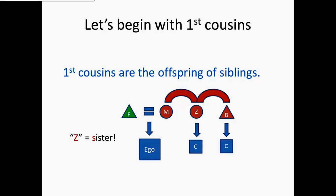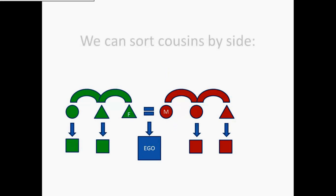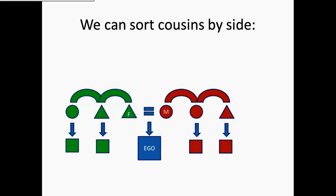Remember that Z is sister. Now we can sort these first cousins out by side. The cousins on the father's side of the family we call patrilateral cousins, and those on the mother's side are matrilateral cousins.